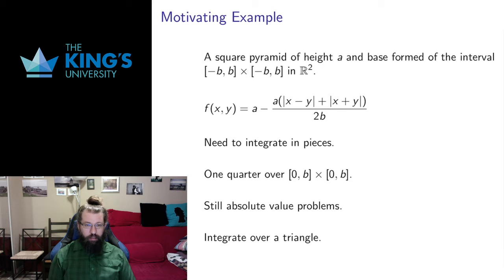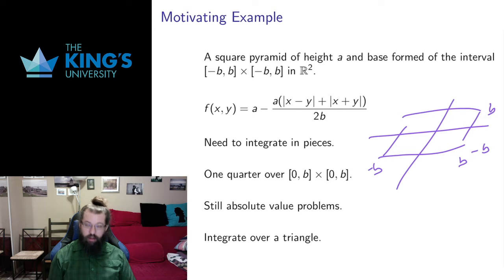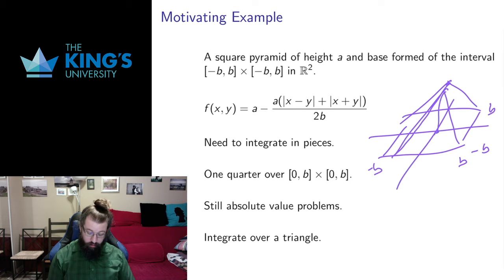I want to use a motivating example here. I want to think about calculating the volume of a square pyramid of height a over the interval negative b to b times negative b to b in R2. I have a square that goes from negative b to b in each axis, so the side length of the base is actually 2b, and then over this I have a square pyramid of height a — a is the vertical height from the center up to the top of the pyramid. I would like to calculate the volume of that pyramid.